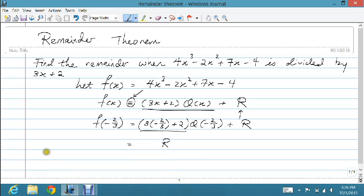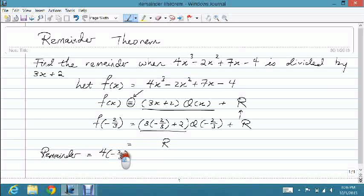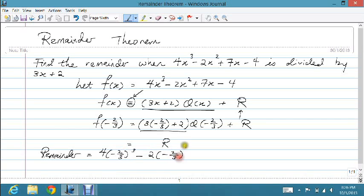So when I substitute in I get 4 times negative 2 over 3 cubed minus 2 times negative 2 over 3 squared plus 7 times negative 2 over 3 minus 4.